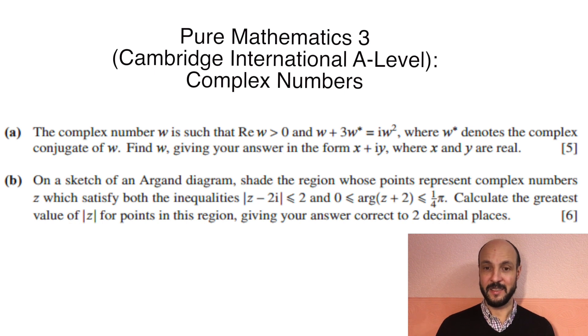Part B: On a sketch of an Argand diagram, shade the region whose points represent complex numbers Z which satisfy both the inequalities mod of Z minus 2i is less than or equal to 2 and 0 is less than or equal to the argument of Z plus 2, which is less than or equal to π over 4. Calculate the greatest value of mod Z for points in this region, giving your answer correct to two decimal places.